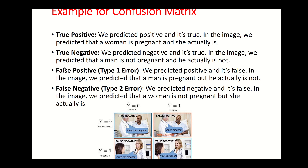The false values are called type 1 error and type 2 error because they are errors. False positives are called type 1 errors and false negatives are called type 2 errors. This is very important in many applications like recommendation systems.